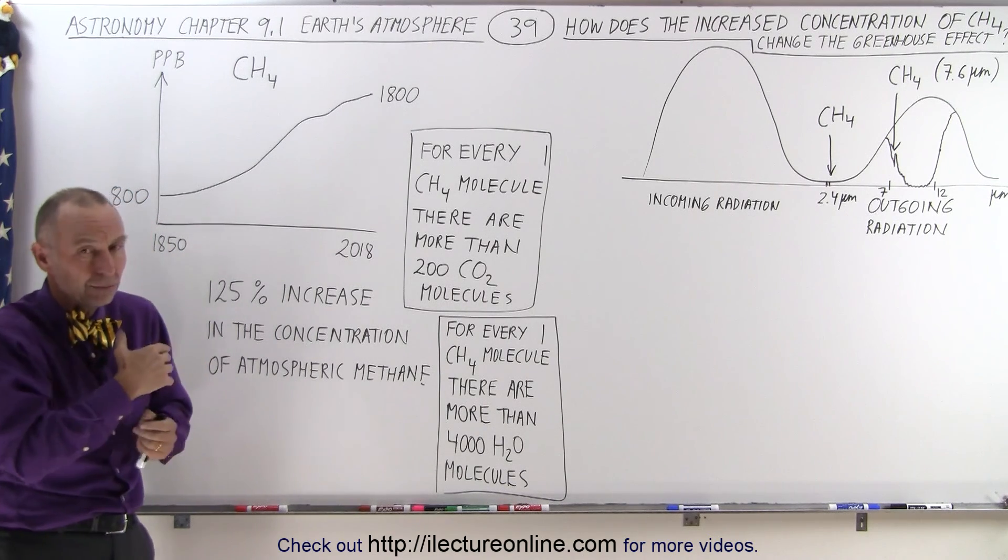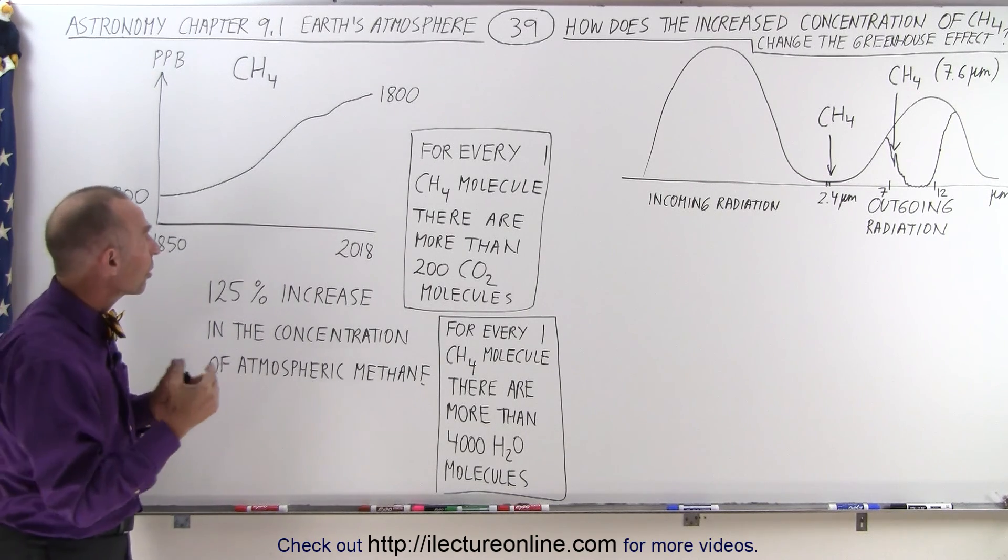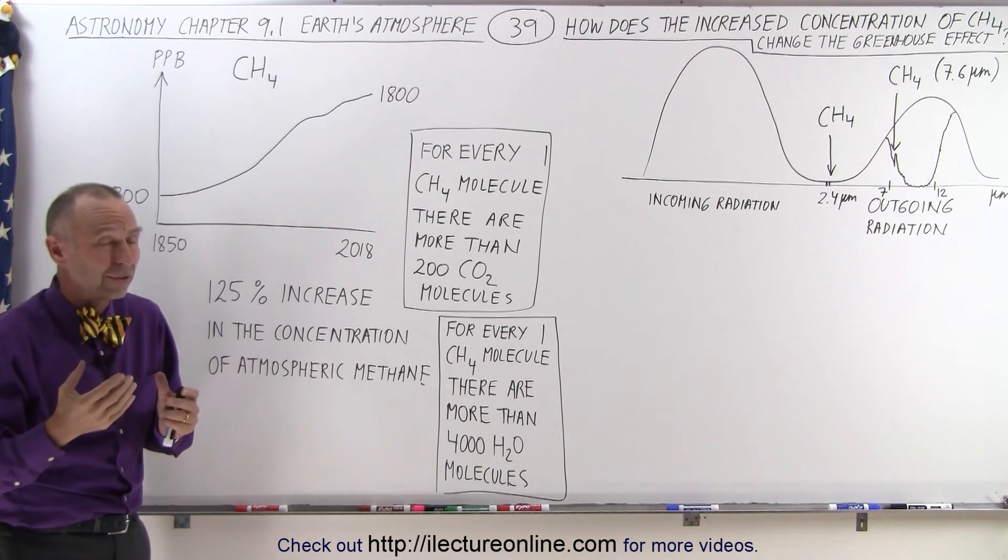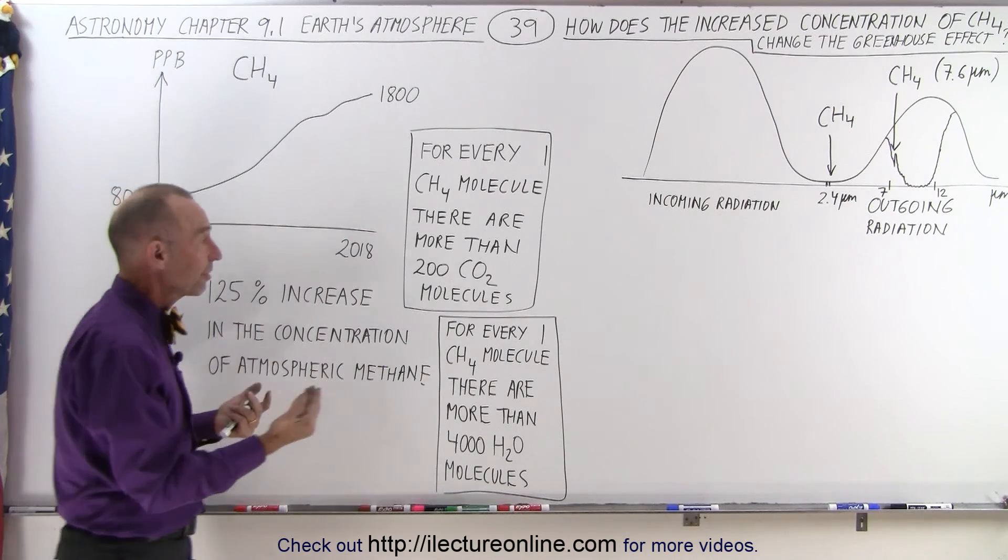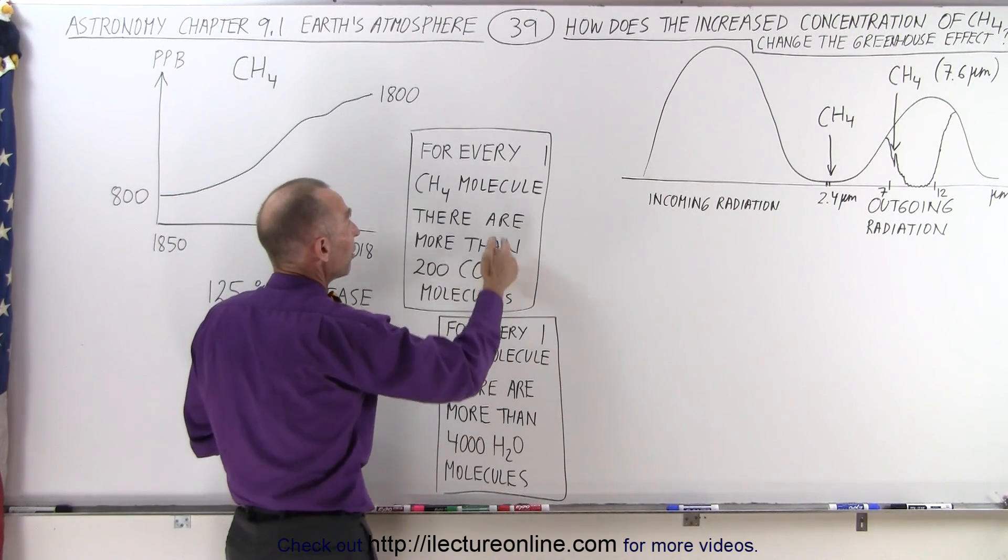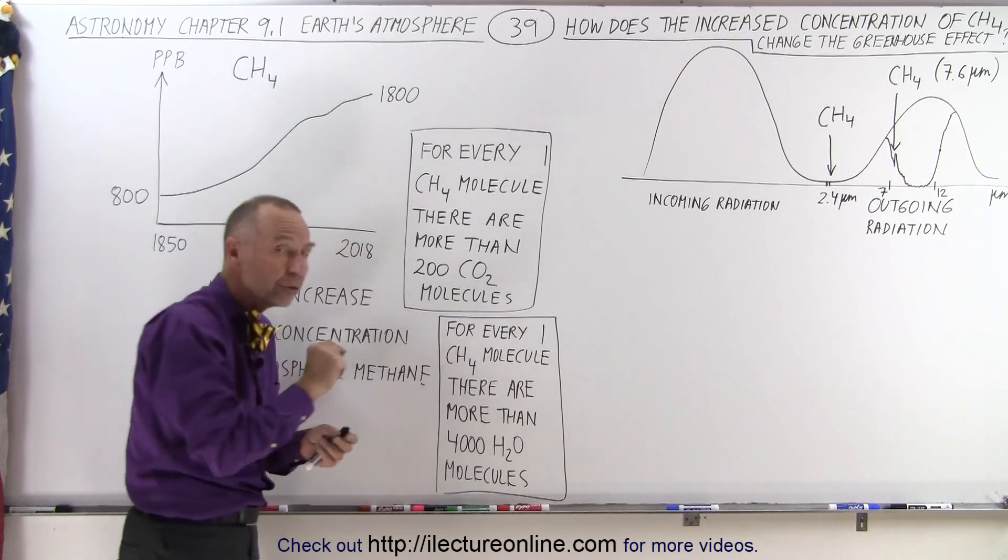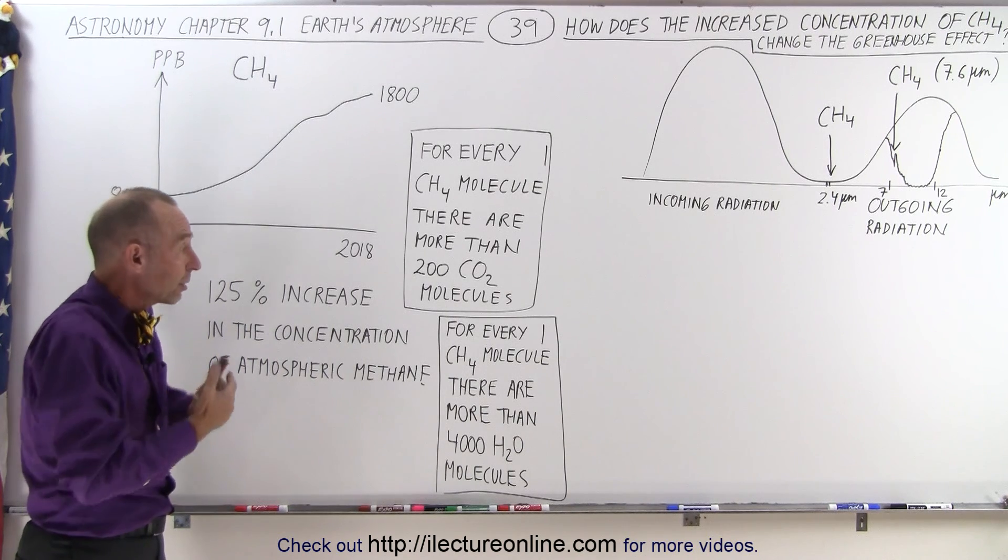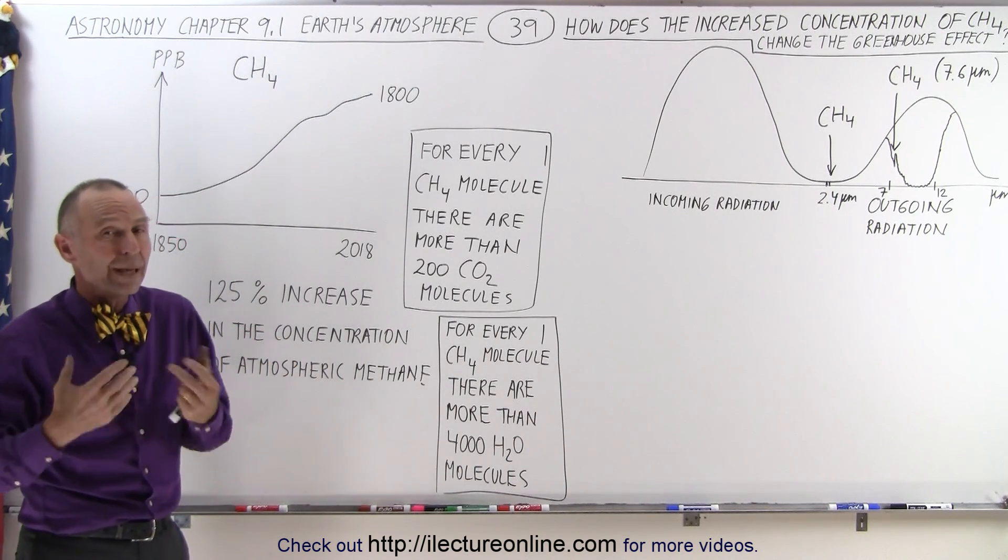And we know that methane is a greenhouse gas. But then when we take a look at the concentration, we're talking about in terms of parts per billion, not parts per million. So there's not that many methane molecules in the atmosphere. For example, compared to carbon dioxide, for every one methane molecule, there are more than 200 carbon dioxide molecules. So you would think on that principle alone that carbon dioxide is probably a much more important greenhouse gas than methane.